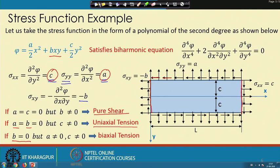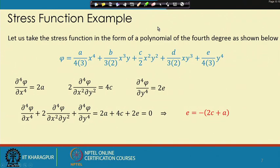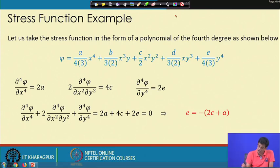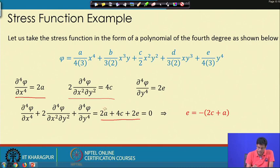Another stress function to consider is a fourth-order polynomial, which does not automatically satisfy the biharmonic equation. We must compute derivatives such as ∂⁴φ/∂x⁴ and ensure the biharmonic condition is satisfied.